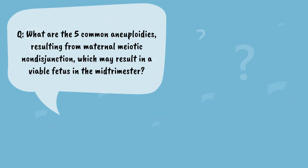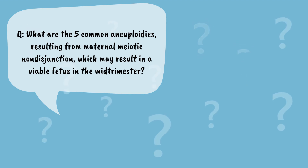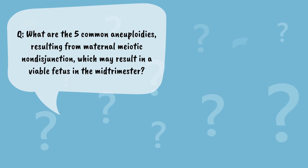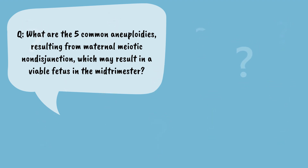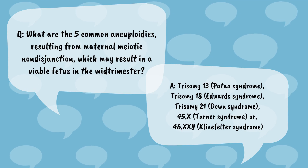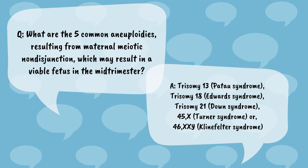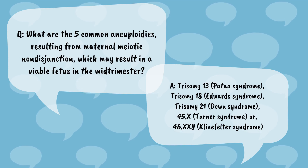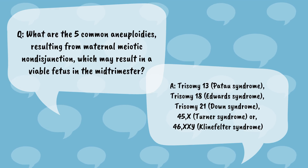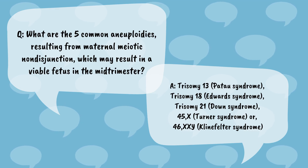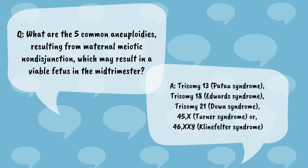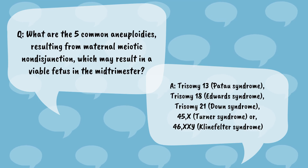The five common aneuploidies resulting from maternal meiotic nondisjunction which may result in a viable fetus in the mid-trimester are: trisomy 13 (Patau syndrome), trisomy 18 (Edwards syndrome), trisomy 21 (Down syndrome), 45X (Turner syndrome), and 46XXY (Klinefelter syndrome).